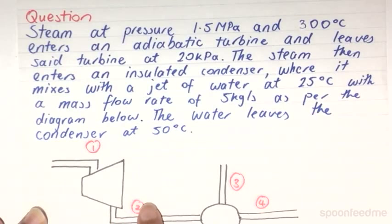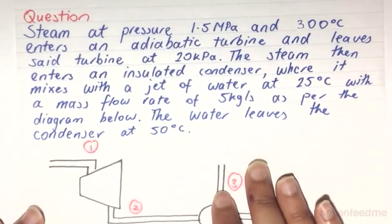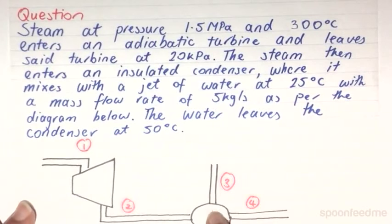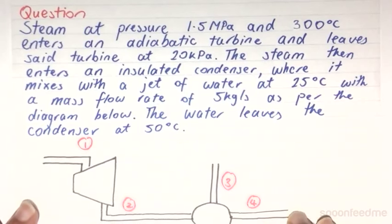which is at 20 kPa. The steam then enters an insulated condenser, where it mixes with a jet of water at state 3, which is at 25 degrees Celsius and a mass flow rate of 5 kg per second. And the water leaves this condenser at state 4 at a temperature of 50 degrees Celsius.